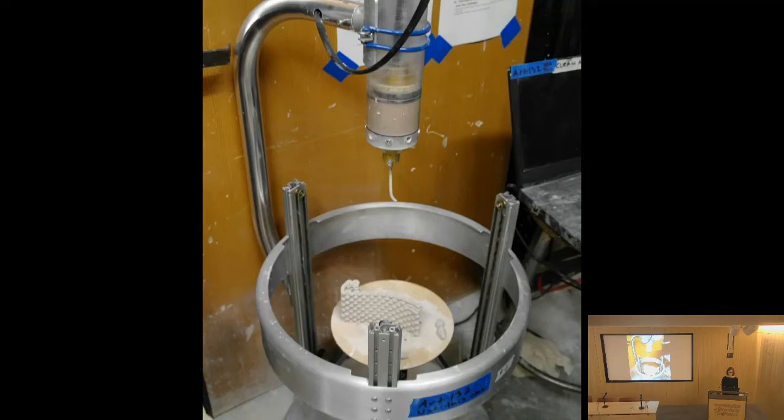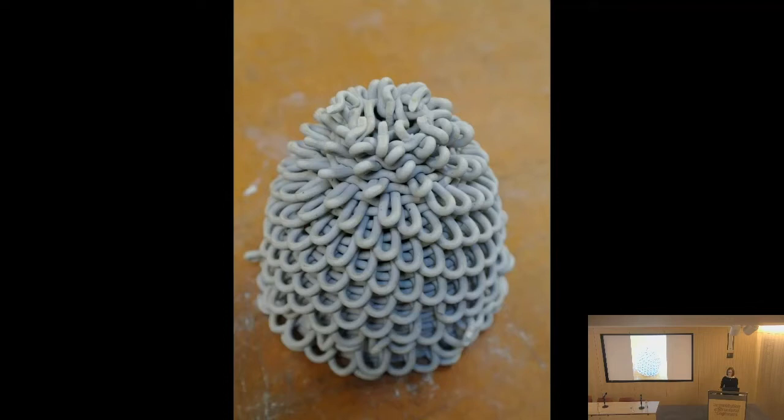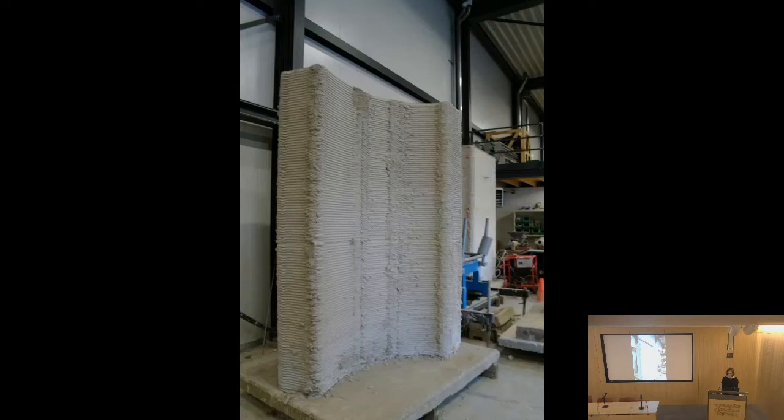Another layering technique being done at the University of Berkeley uses clay being extruded to form tiles. What's interesting here is the creativity with the layers — you can get freeform loops and very intricate designs, as well as big, thick layers, even though it's very much at the architectural stage.